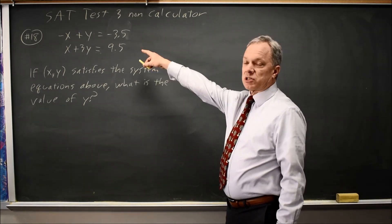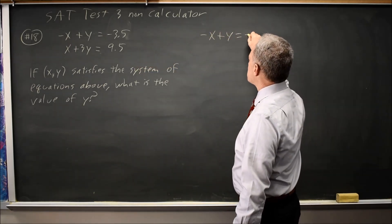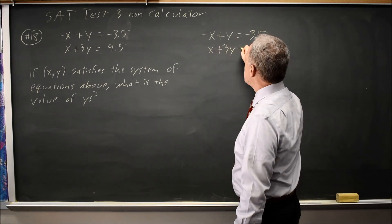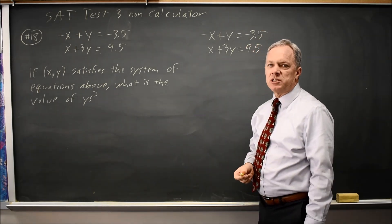The easiest way to solve this system is by eliminating a variable. I have negative x plus y equals negative 3.5, positive x plus 3y equals 9.5.